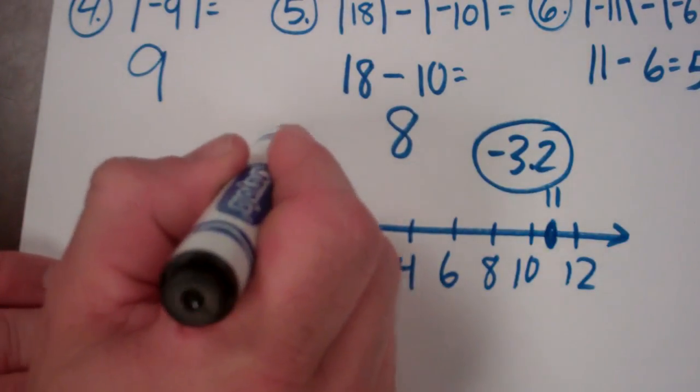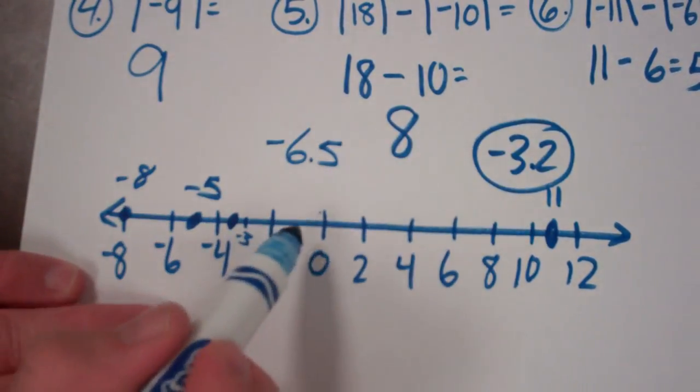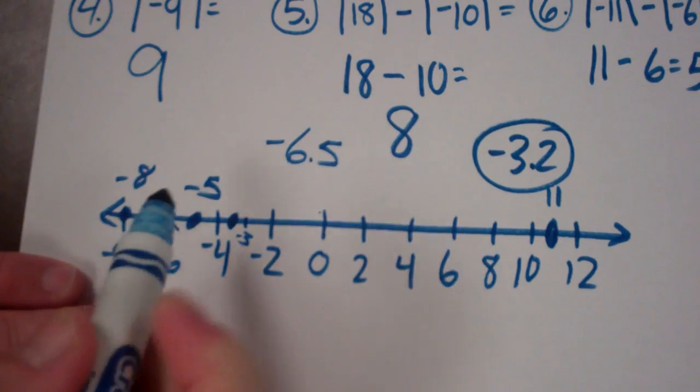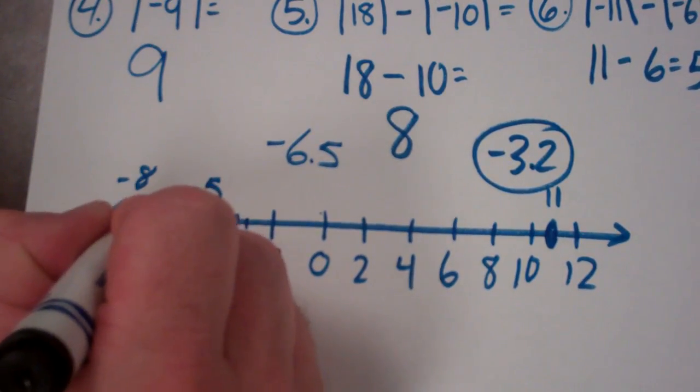So let me show you another one. Let me show you negative 6.5. Negative 6.5 does not go back to the right. Negative 6.5 is halfway over to negative 7. So we'd be at negative 6.5.